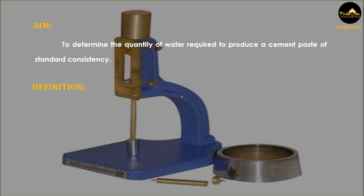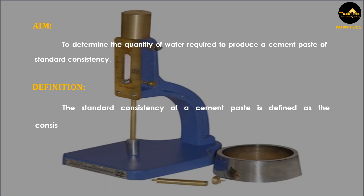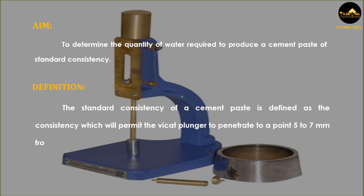Definition: The standard consistency of a cement paste is defined as the consistency which will permit the Vicat plunger to penetrate to a point 5 to 7 millimeters from the bottom of the Vicat mold.